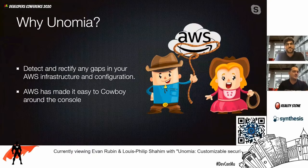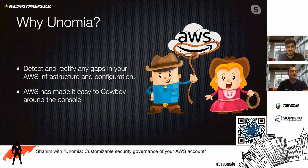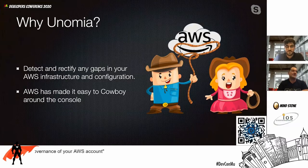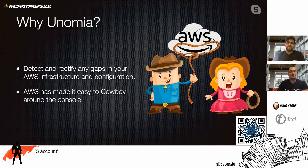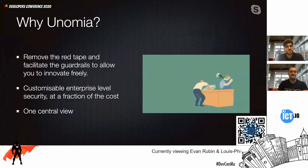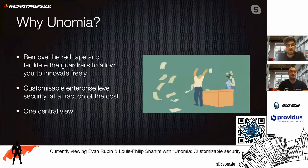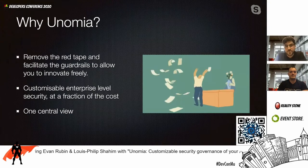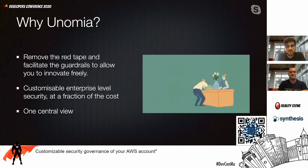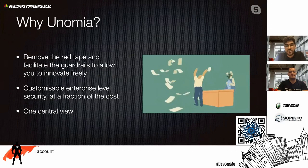Why would you use Unomia? Unomia will help detect and rectify any gaps in your AWS cloud infrastructure, as well as configuration based off of AWS best practice, our cloud experience, and your organizational requirements. Because AWS has made it so easy to cowboy around the console, Unomia acts as your guardrails. It will help you remove all of the red tape found at large corporates, making it available to all sized businesses as well as for private use — giving you enterprise level security for any use case, but at a fraction of the cost.